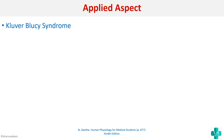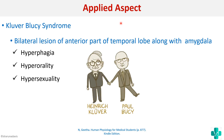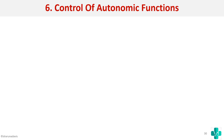The applied aspect of sexual behavior is the famous Kluver-Bucy syndrome. It occurs when there is a bilateral lesion of the anterior part of the temporal lobe along with the amygdala. Symptoms include hyperphagia, hyperorality, and hypersexuality. This was discovered by doing bilateral temporal lobectomies in monkeys. The involvement of the amygdala along with the temporal lobe produces these symptoms.